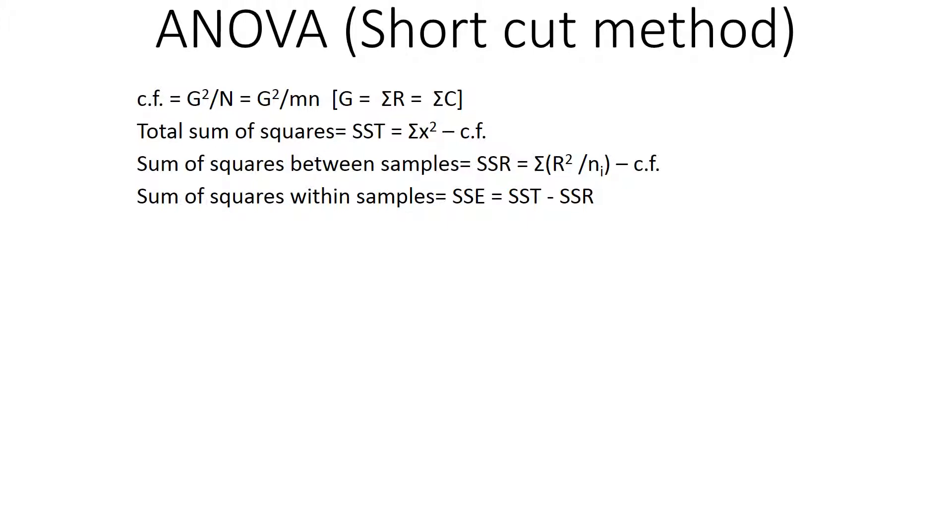Let's go through an example. Example number two: A textile mill has a large number of looms. Each loom is supposed to provide the same output of cloth per minute. To investigate this assumption, three looms are chosen at random and the output noted at different times. The following data is obtained: first loom, second loom, third loom. This is all the reading. This is the output. We need to compare if the output is the same or not.